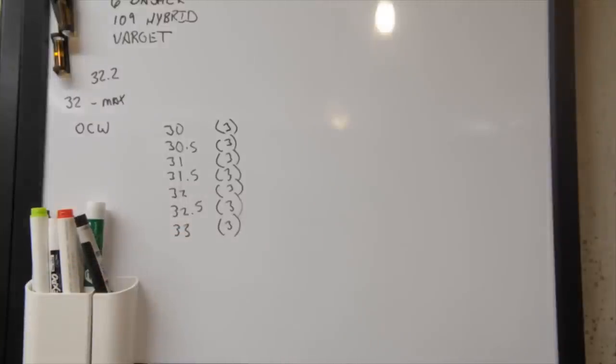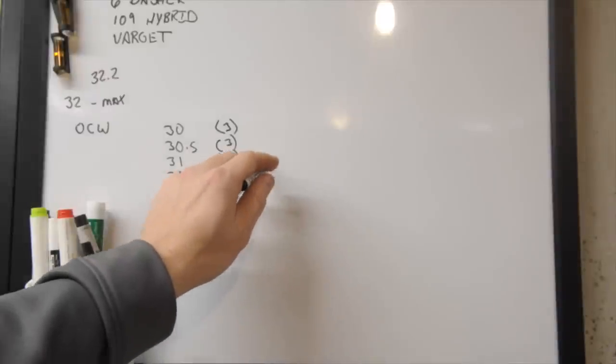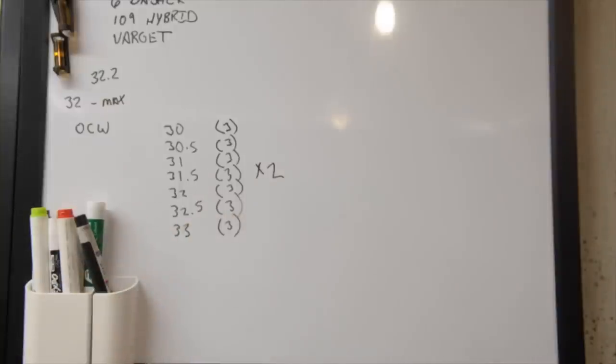So what we're going to want to do is load all of our charge weights up. We're going to do an optimized charge weight test, OCW, and what we're going to do is we're going to start low. So we're going to start at 30 grains of Varget, 30.5, 31, 31.5, 32, 32.5, 33. And we'll just stop at 33. We think that's where we're going to get more than enough velocity for what we need. And depending on your range availability, you might want to load more. You might want to check groups along with velocity, along with pressure. So maybe you'll multiply all that by 2, so that you can shoot 3 for speed and 3 for a group, or 5 for speed, 5 for a group. If it's easier for you to do that and go to the range once, like it is for me, I'll do that and then I can pull them apart when I get home, the ones I don't need.